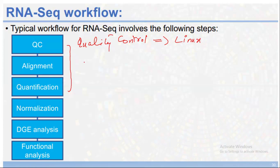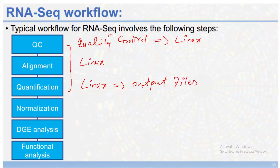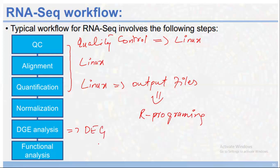After QC, we align our reads with the reference genome — also conducted through Linux. Third is quantification: checking how many genes are being expressed in our files, also done through Linux. After quantification, the output files will be used through programming to visualize results and identify differentially expressed genes — that downstream analysis will be done by programming.